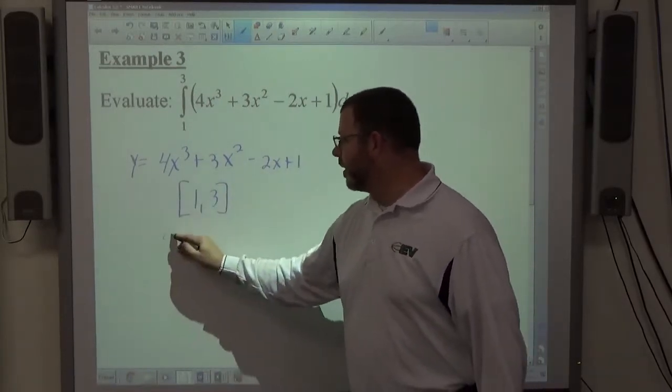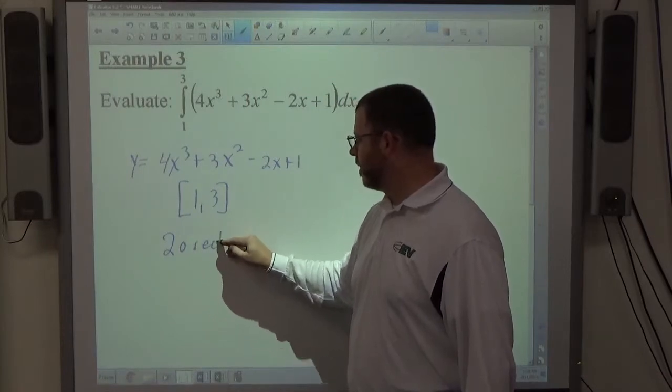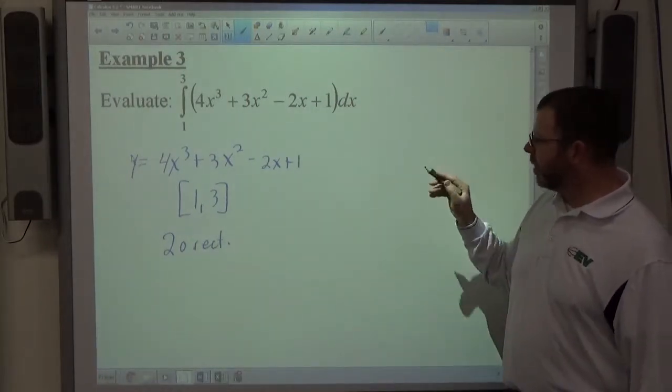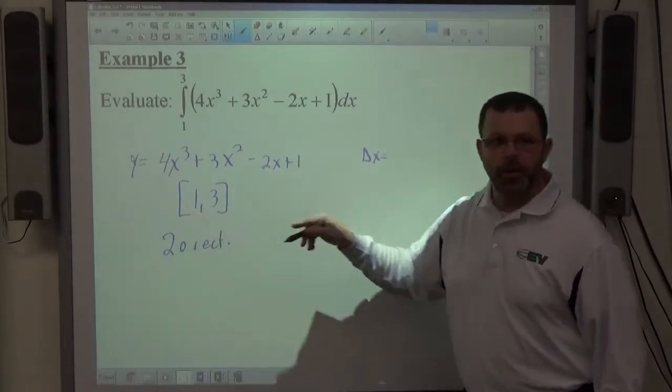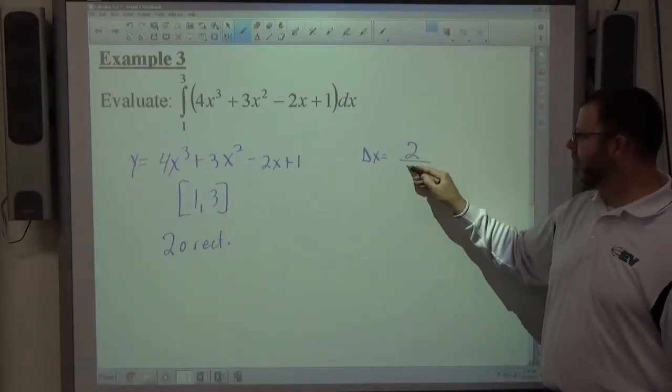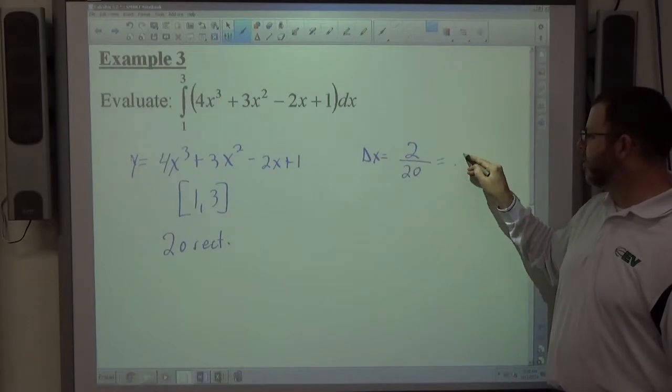And I'm going to use 20 rectangles. If I go ahead and do that, my delta x is going to be the length of the interval from 1 to 3, which is 2 spaces, divided by the number of rectangles, 20. That comes out to 0.1.